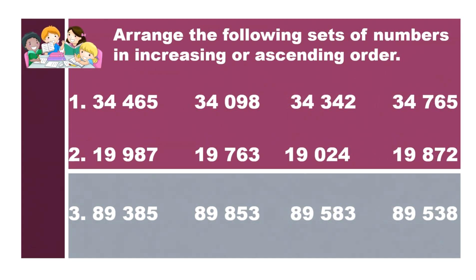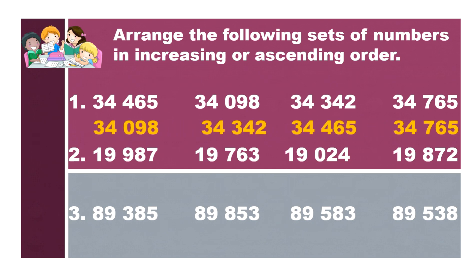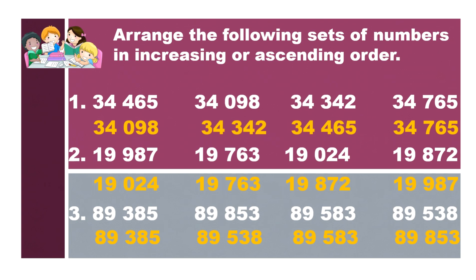Now let us check your answers. When you say increasing or ascending order, you are arranging numbers from least to greatest. For number 1: 34,098, 34,314, 34,465, and 34,765. For number 2: 19,024, 19,763, 19,872, and 19,987. For number 3: 89,385, 89,538, 89,583, and 89,852. If you got the perfect score, good job!